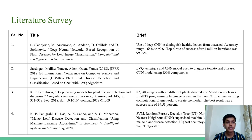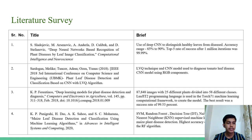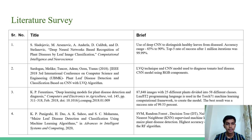Literature survey. We reviewed many published studies on image processing, CNN, supervised and non-supervised learning that might assist us to understand how plant diseases are classified based on their images. Based on this, we have presented the literature survey of the top 5 papers that helped us the most.